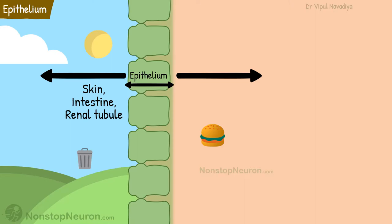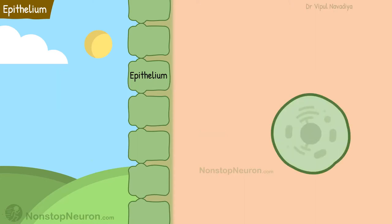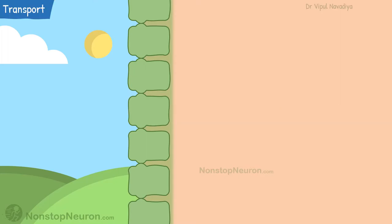For other cells in the body, transport work includes transport across a single membrane, which is relatively simple. But here we are talking about transport across cells. This is a different situation and it requires special arrangements. So let's talk about these arrangements.